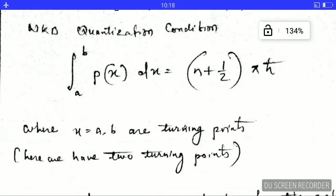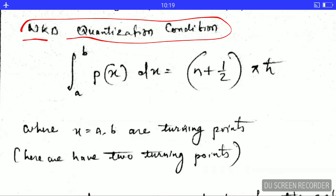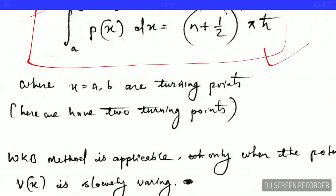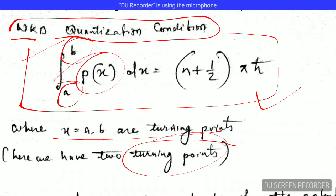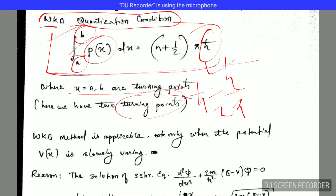It is very important to remember the WKB quantization condition. I am not going to show the derivation here, but it is very, very important — lots of numericals based on the WKB method can be solved using this condition. The condition is: the integral from a to b of p dx equals (n + ½)πħ, where a and b are the turning points, p is the momentum, n is an integer, and ħ = h / 2π is the reduced Planck's constant.